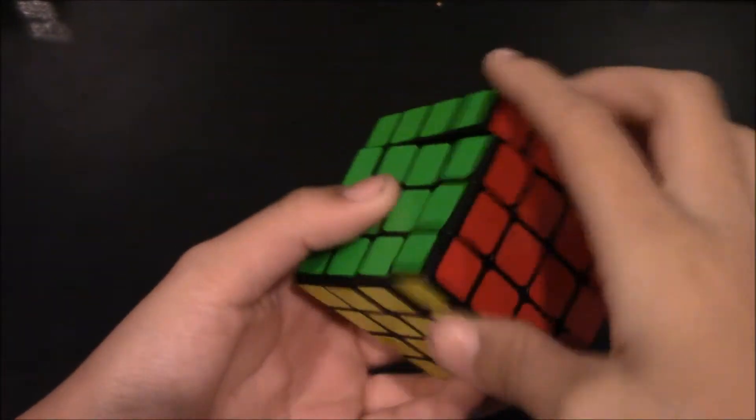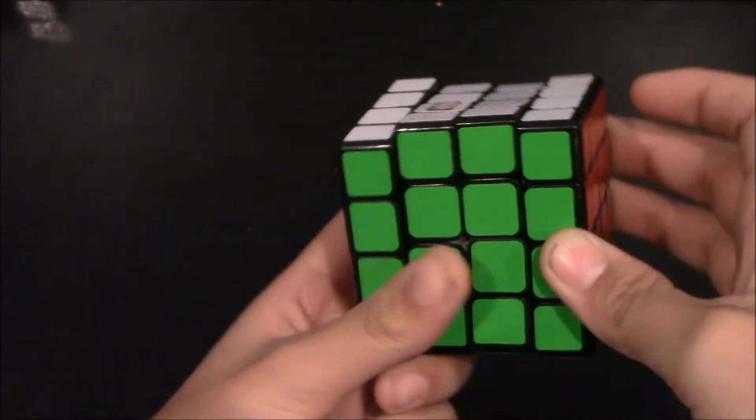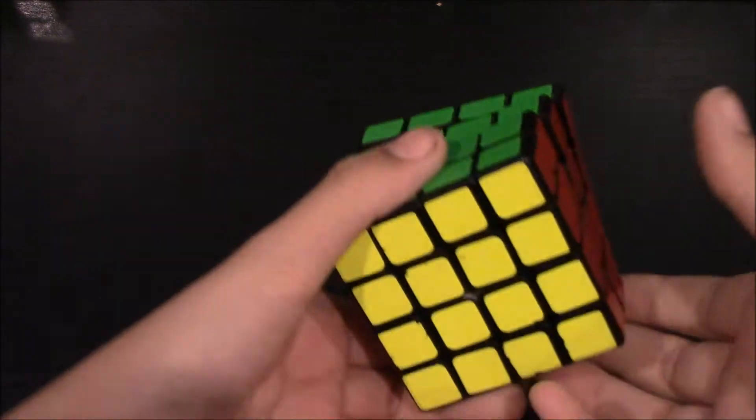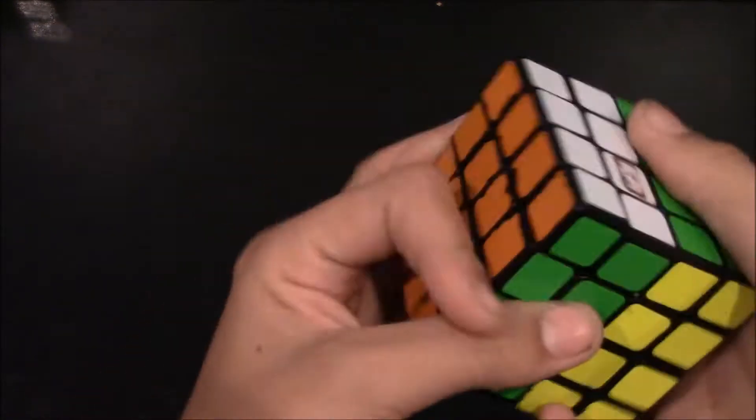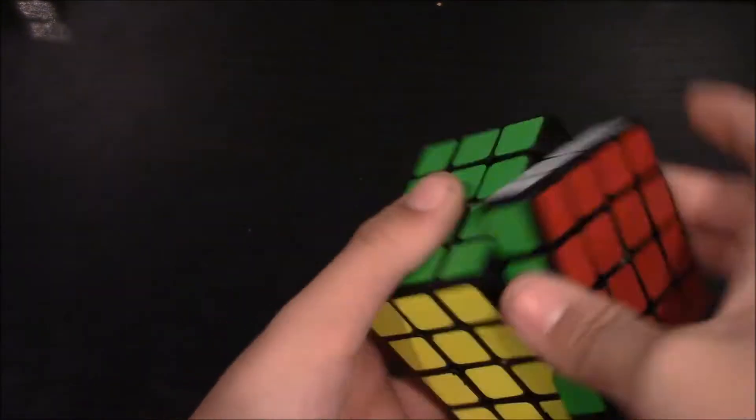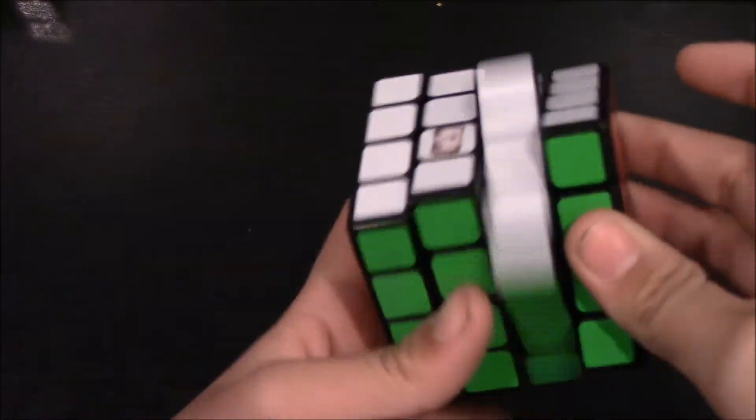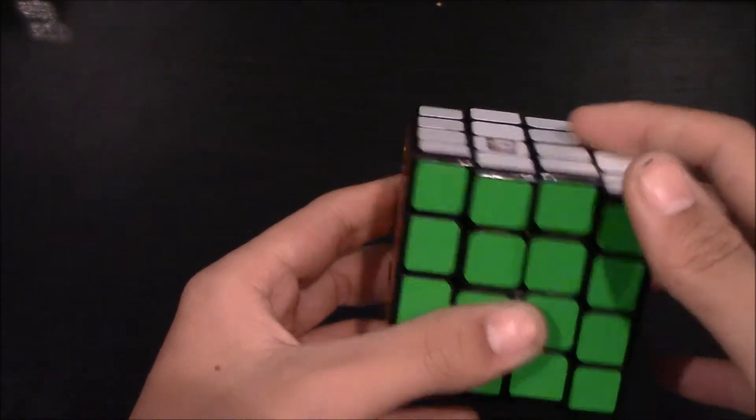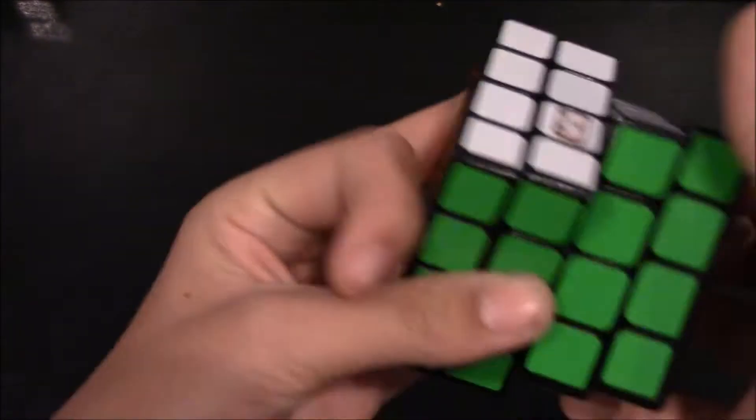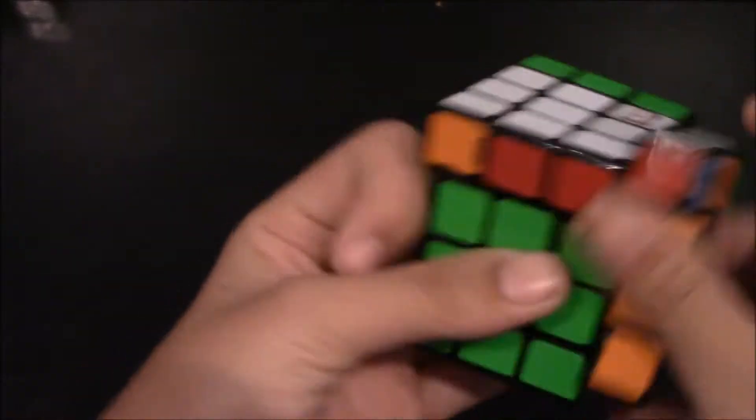For 4x4, I'm going to be using my Mini Aosu because my Yusin Blue popped and I lost a piece, so yay. I'm hoping for a sub 51 average or maybe sub 50, but that just depends on if I get a lot of parity or not. And a sub 47 single.